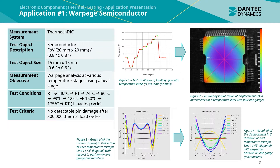One thermal load cycle consisted of a temperature variation from room temperature down to minus 140 degrees, then up to 175 degrees and then back to room temperature. The figure to the top shows the test conditions of the loading cycle with temperature levels in degrees Celsius versus time in hour minutes. Figure 2 shows a 2D overlay visualization of displacement in micrometres at a temperature level with 4 line gauges shown in red.